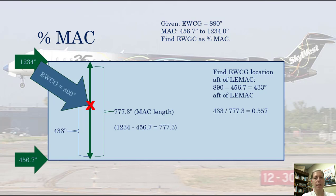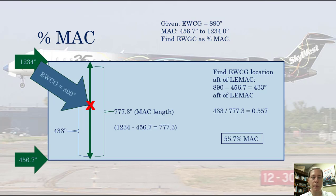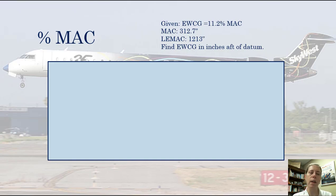At this point I'm glad because I have a decimal — nothing larger than one. If it's larger than one, something is wrong with the calculation. So in this example, 0.557 means we're basically at 55.7% of the way along the mean aerodynamic chord, which is about where I drew it — just over halfway. With larger aircraft, you'll often see a percent MAC needed to set the trim and for loading applications, which is why we express CG as a percent MAC.